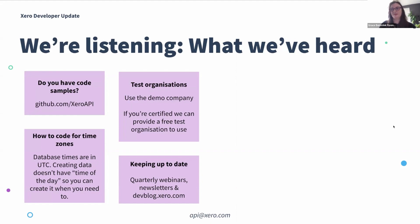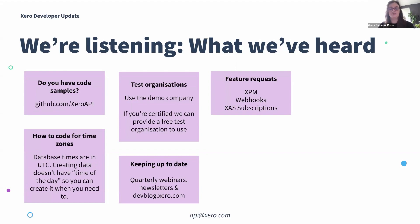We did have a number of feature requests — these are the three that were most popular. I really hear you with XPM. XPM is a key product for Xero, which we're continuing to invest in, and I don't have any API updates for you but I'm passing that feedback back to the team. Same goes for webhooks — ongoing conversations with our product and engineering teams around your webhook requests. And of course, App Store subscriptions — a few app partners asking about additional features; we are working on building those out.